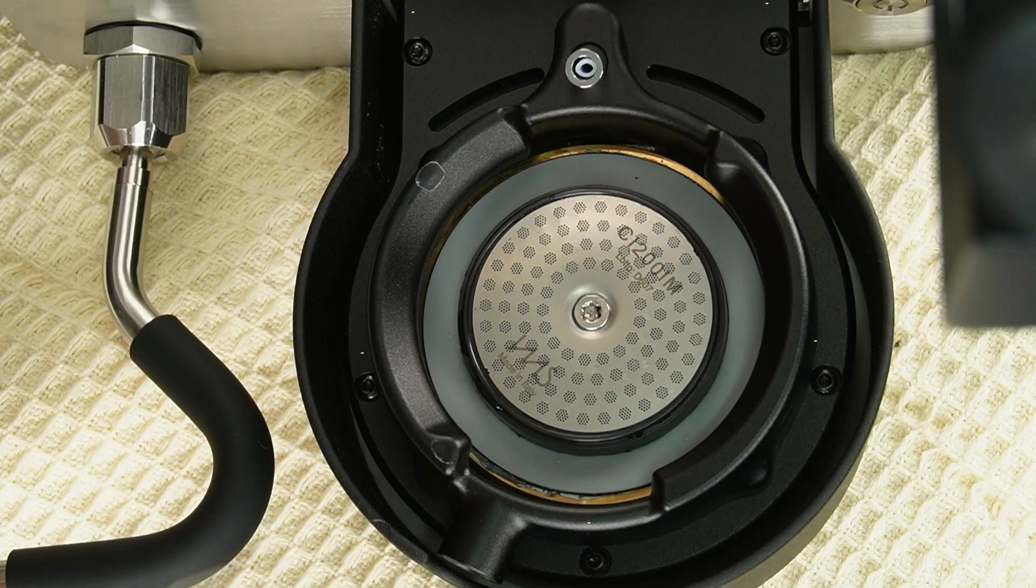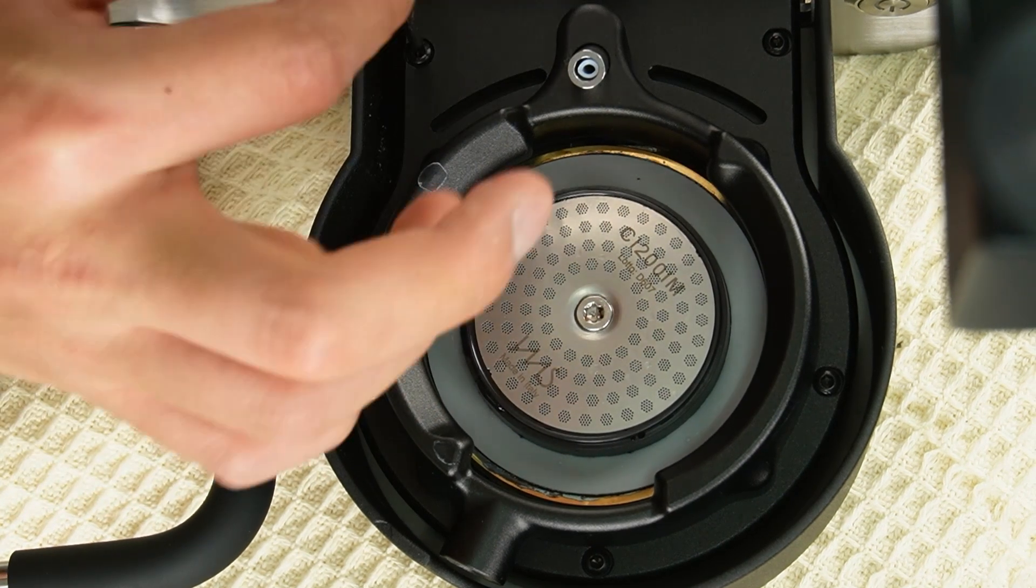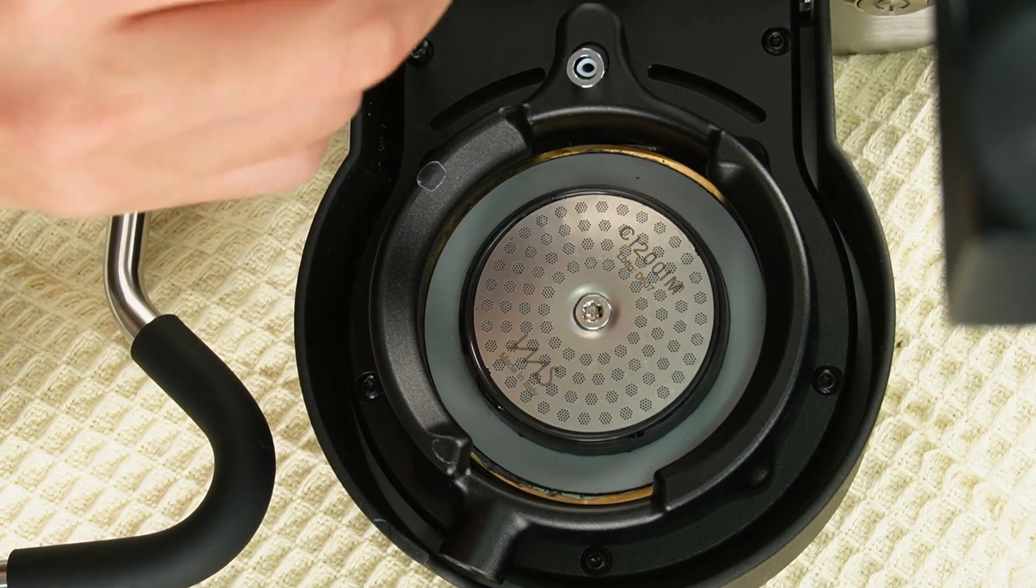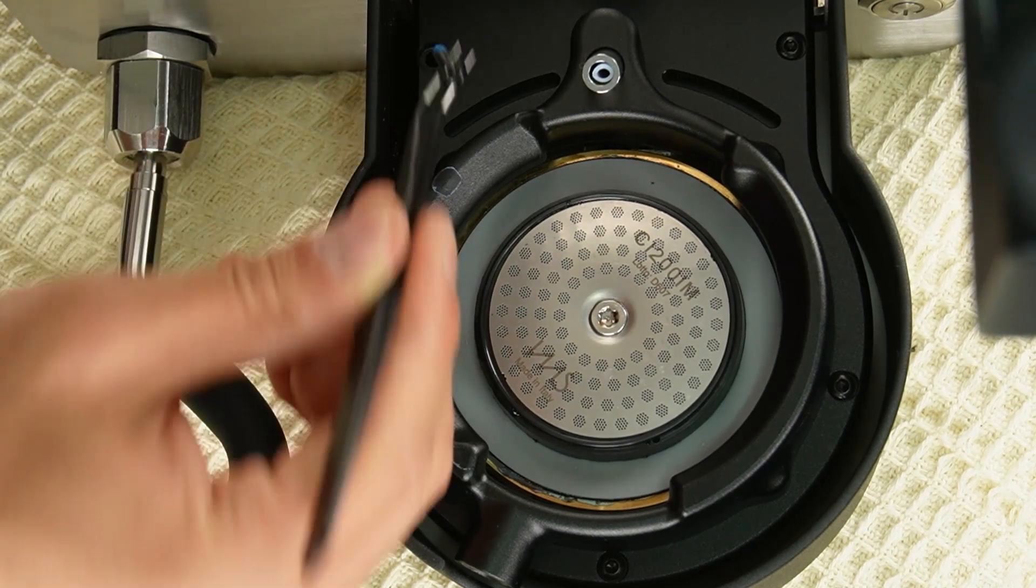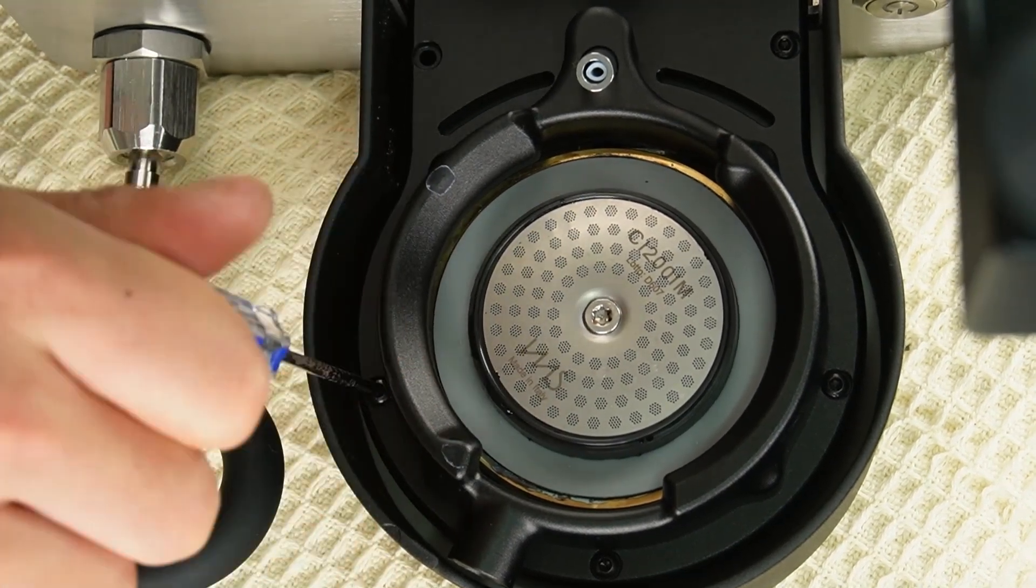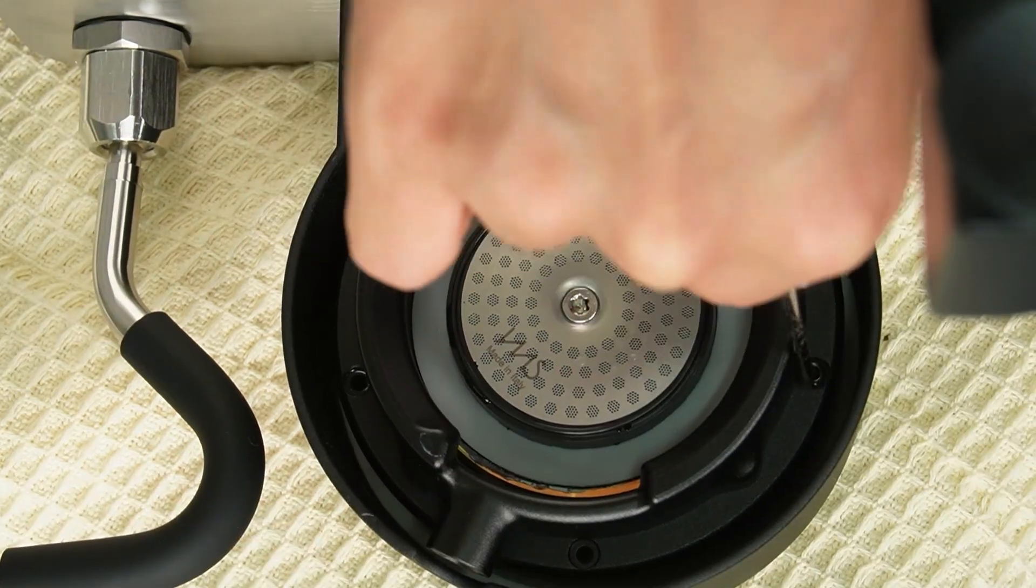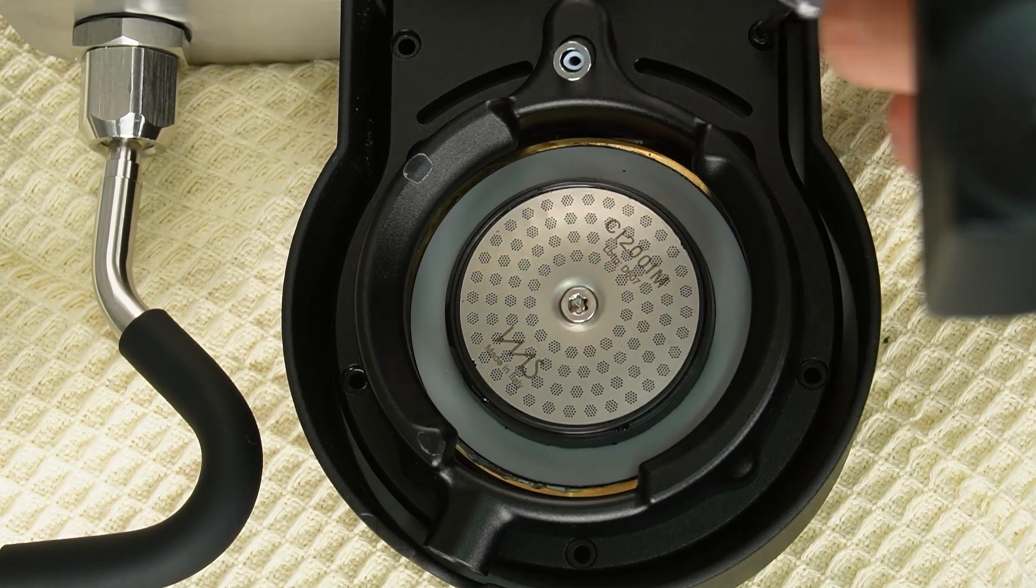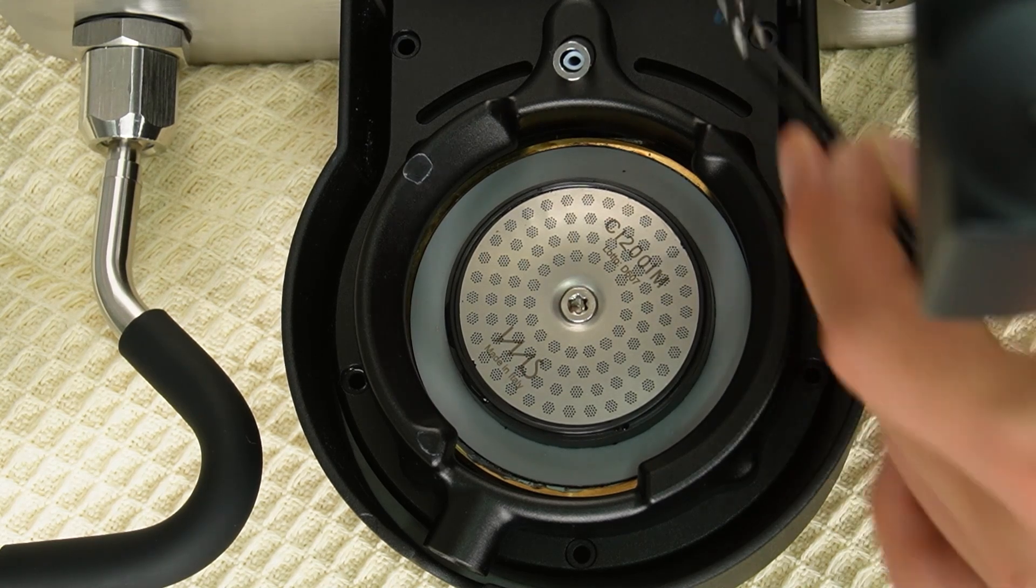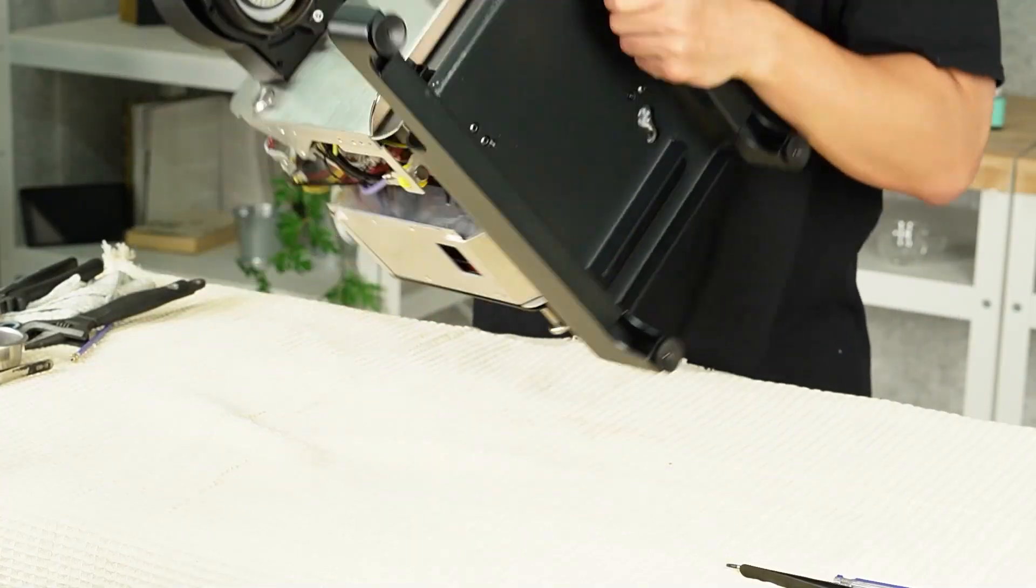There are five screws on the bottom of the group head support. Use a T10 Torx screwdriver to unscrew them. Once each screw is loosened, use angled pointy tip tweezers to remove them. Once all five screws are removed, return the machine to its upright position.